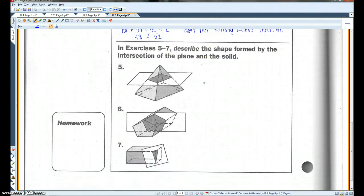Let's take a look at five through seven. Describe the shape formed by the intersection of the plane and the solid. Go ahead and try these. Hit pause, try these, and then hit play for the solutions. And these are the answers you should have gotten for this section.